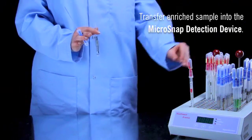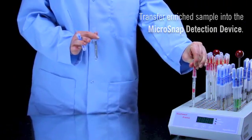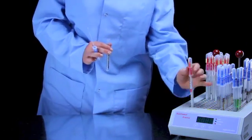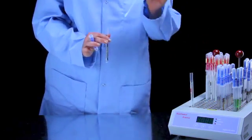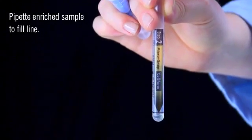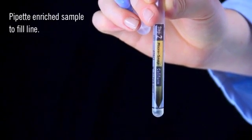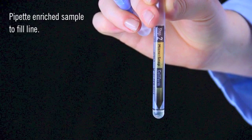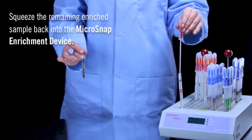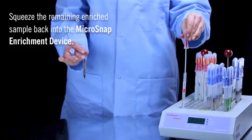Using the other hand, use the built-in pipette in the enrichment device to draw enriched sample into the bulb. Separate the enrichment swab from the tube and transfer the enriched sample to the detection device. The detection device has a fill line marked on the bottom of the tube. Fill to this line, or about 0.1 milliliter. The remaining enrichment sample can be returned to the incubator for additional testing.